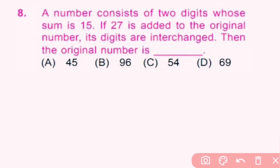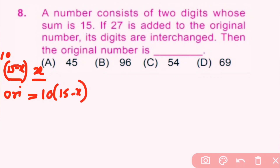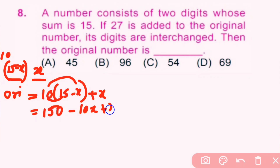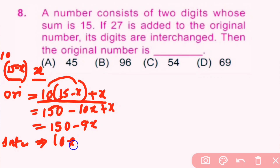Question number 8: a 2-digit number whose sum of digits is 15. If 27 is added to the original number its digits are interchanged. Find the original number. Let the units place be x; since the digit sum is 15, the tens place is 15 minus x. The original number is 10(15 minus x) plus x, which equals 150 minus 10x plus x, giving 150 minus 9x. The interchanged number is 10x plus (15 minus x), which equals 9x plus 15.